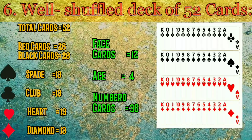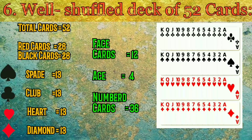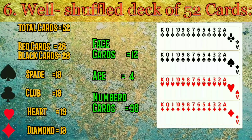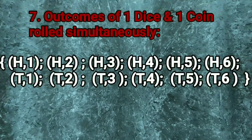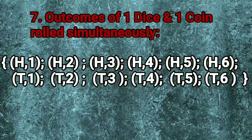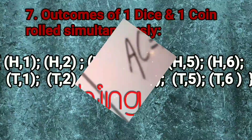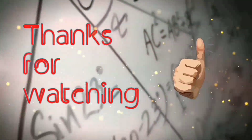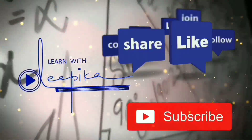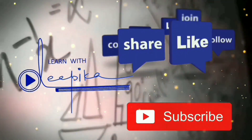Number seven: the outcome of one die and one coin rolled simultaneously. As you can see, there are a total of 12 outcomes. Thank you for watching my video — I hope you liked it.